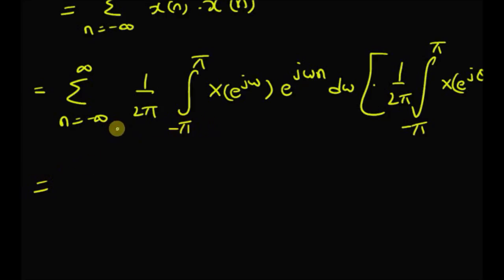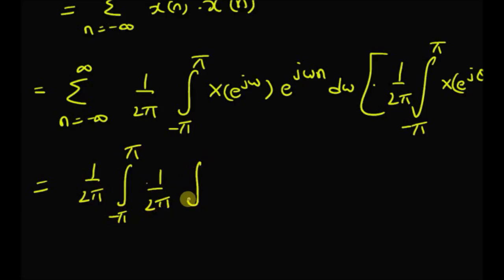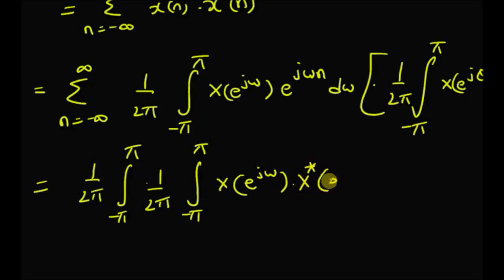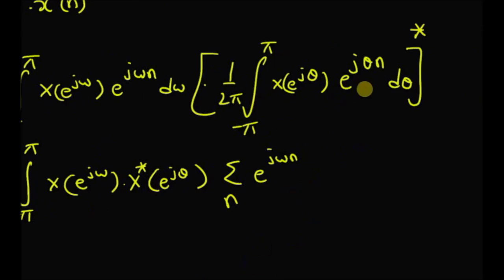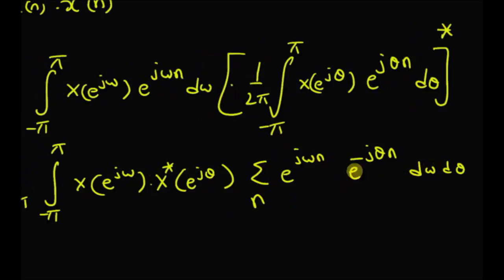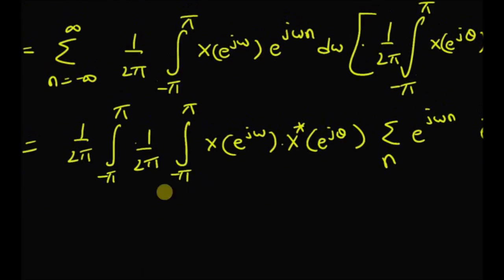Now by rearranging the integrals and the summation, we have 1 by 2 pi, integral from minus pi to plus pi, and again 1 by 2 pi, integral from minus pi to plus pi. Then we have x of e to the power j omega — the first DTFT — and its conjugate x conjugate of e to the power j theta, and then the summation over n from minus infinity to plus infinity of e to the power j omega n multiplied by e to the power minus j theta n, d omega d theta. This summation can be clearly seen as the DTFT of 1 with frequency theta minus omega.